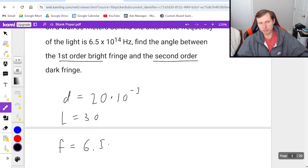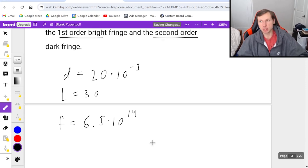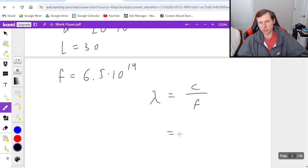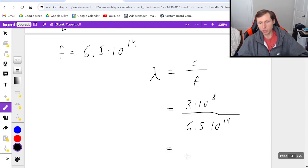They give me frequency, which I don't appreciate: f = 6.5 × 10^14 Hz. I don't like that because I have to solve for wavelength. Remember, λ = c/f, where c is the speed of light, 3 × 10^8 m/s. So λ = 3 × 10^8 / 6.5 × 10^14 = 4.6 × 10^-7 m.